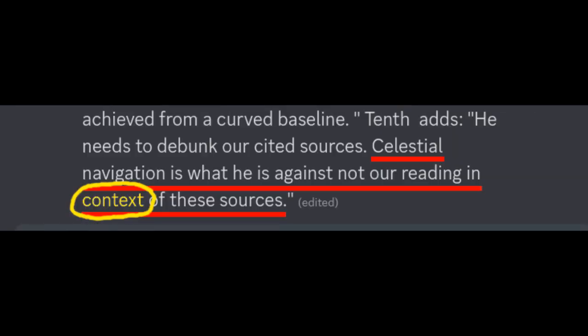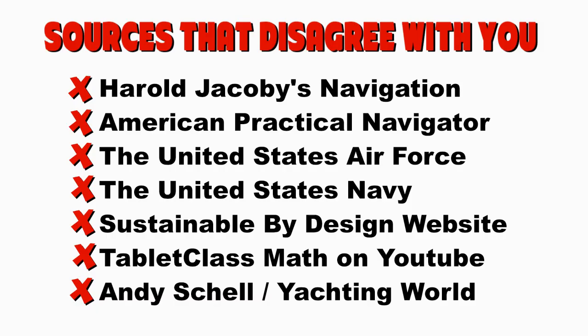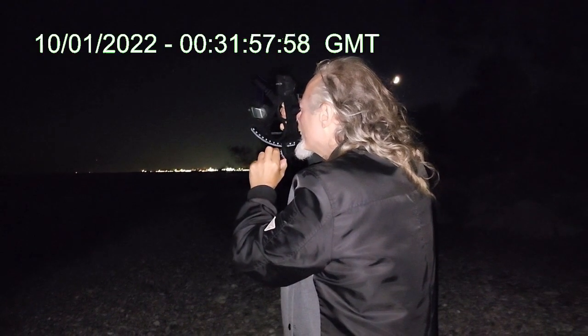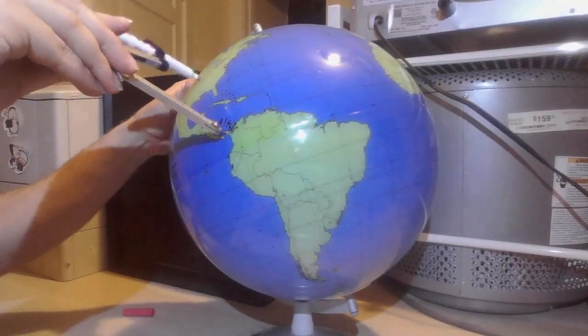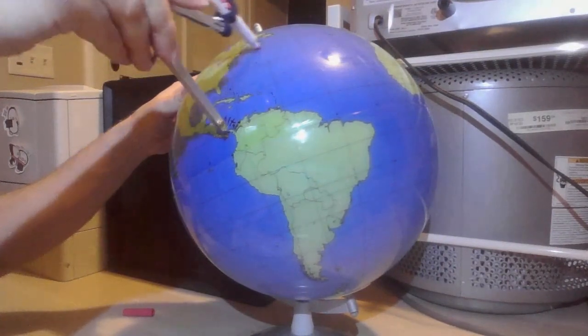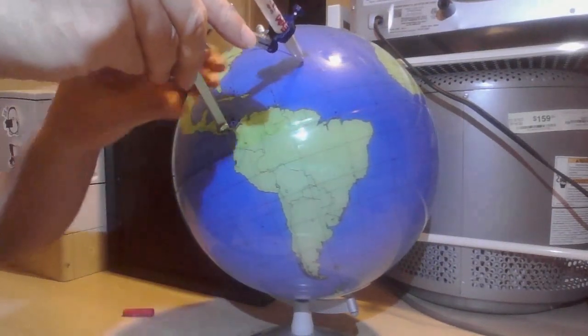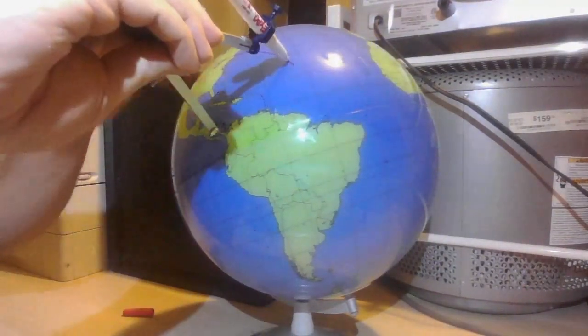Last December, on the Flat Earth Debate Discord server, I responded to demands that I address their citations with a video doing just that, even throwing in the added Christmas present of an actual position-fix demonstration, turning sextant angles to latitude-longitude coordinates, and showing how the underlying geometry is entirely globe-based. They, of course, responded with a detailed analysis of that video and their own demonstration of a position fix.